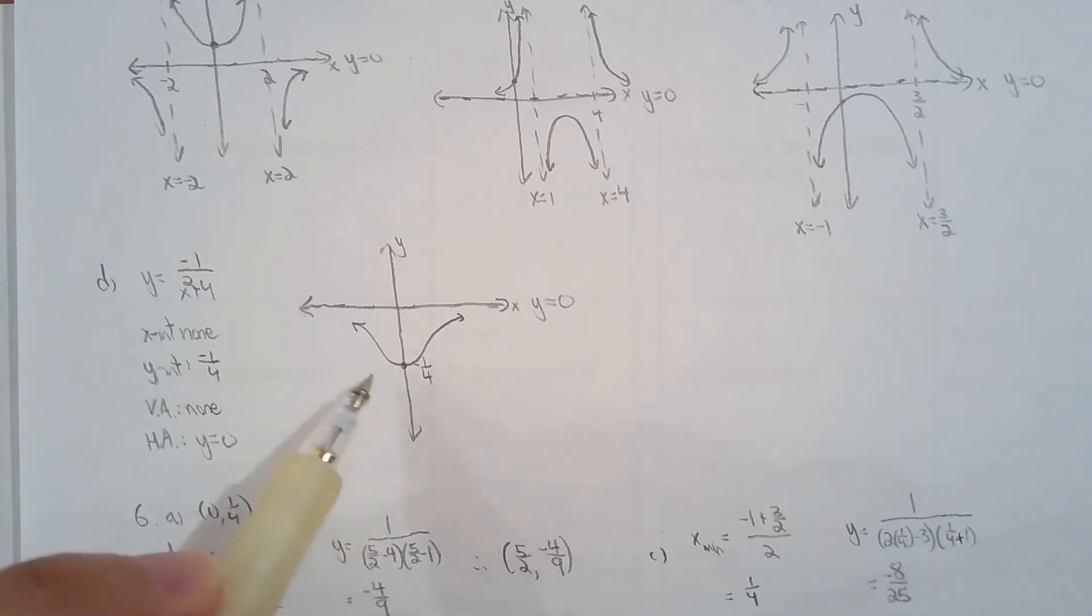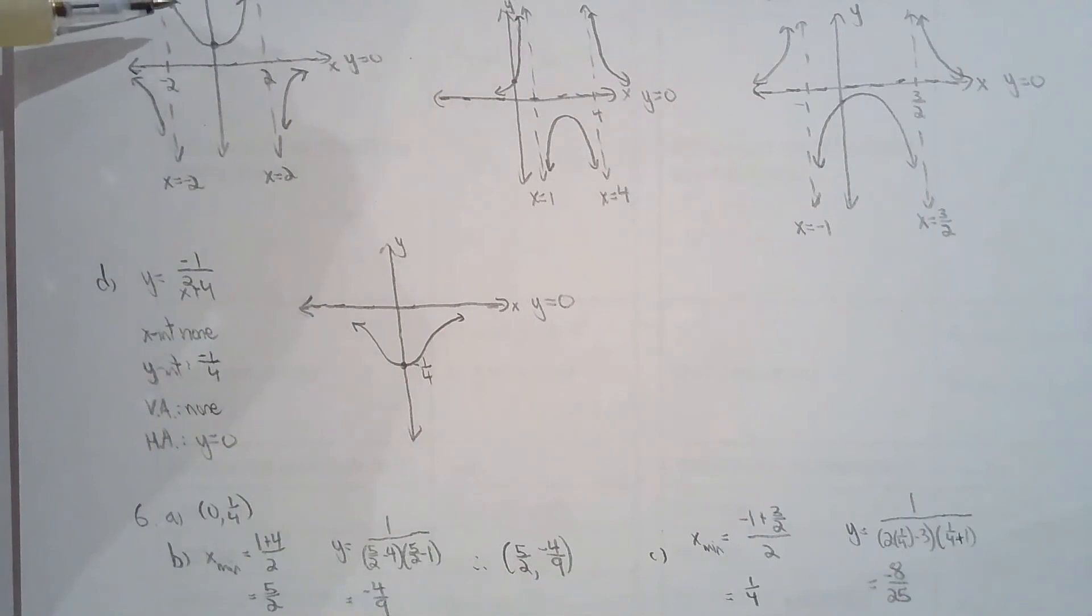So to find the point, you take the value from the vertical asymptotes and average them. Because those values on the reciprocal of the quadratic function come from the quadratic function. So just like, for the same reason, you averaged the zeros of a quadratic function to find the vertex, I'm using the exact same logic here to help me find the local min or local max point.